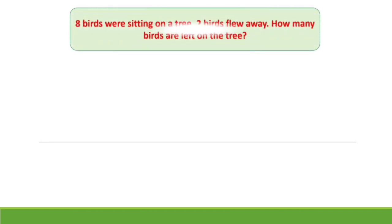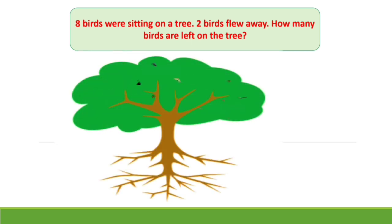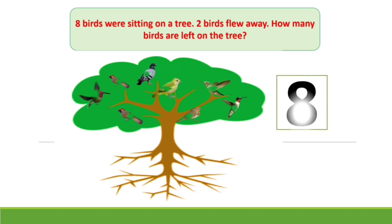8 birds were sitting on a tree. 2 birds flew away. How many birds are left on the tree now? There are 8 birds on the tree.